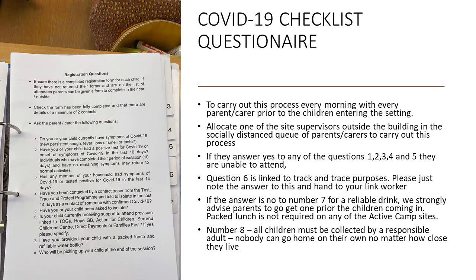You have a COVID-19 checklist questionnaire that must be asked every morning to every single parent or carer who drops off their child. Allocate one of the site supervisors outside the building in the socially distanced queue to carry out this process. If anyone answers yes to questions one through five, they are unable to attend because they or someone in the home has symptoms or they've been told to isolate. Question six is linked to track and trace purposes, so note the answer and hand it to your link worker regarding whether children are accessing any other community play provisions.